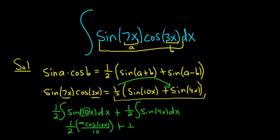Plus 1 over 2, and then it'll be negative cosine 4x over 4, and then we have the plus c.